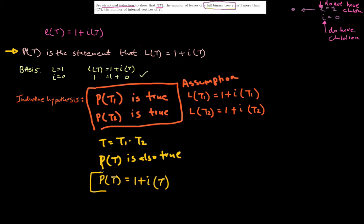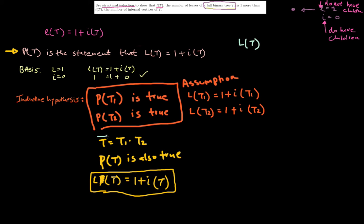P(T1) being true really means L(T1) = 1 + I(T1), and P(T2) being true means L(T2) = 1 + I(T2). What I want to show in yellow is that P(T) is true, meaning L(T) = 1 + I(T). To show this, I can start with the expression that the leaf nodes of tree T equals the leaf nodes of T1 plus the leaf nodes of T2.